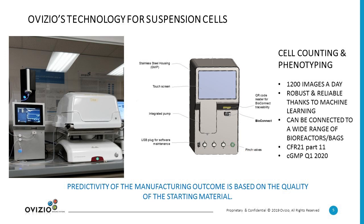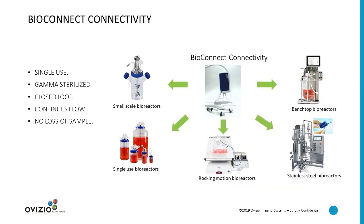The reason why we do this is that we believe that to have a high-quality product, you need to be sure that your starting material is of high quality as well. The iLine F comes with the Bioconnect — a single-use probe that connects your cell culture vessel with the microscope. It guides the cells through a closed serial loop through the microscope where images are taken, and then returns them to the cell culture vessel. It's a gamma-sterilized, single-use device in a closed-loop system that ensures a continuous flow with no loss of sample volume.